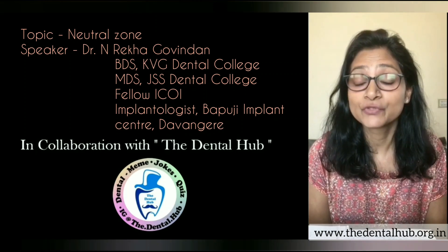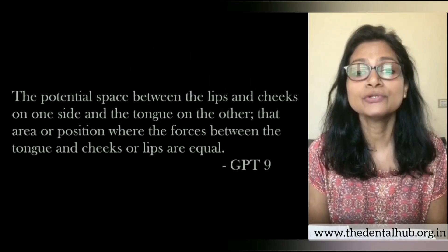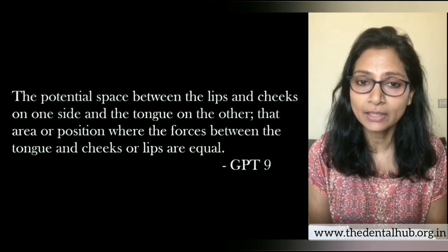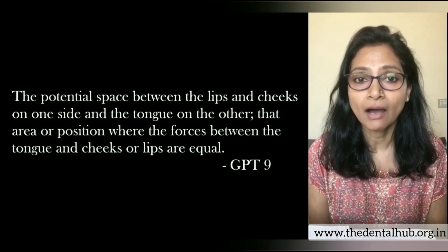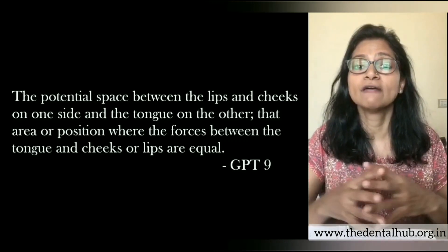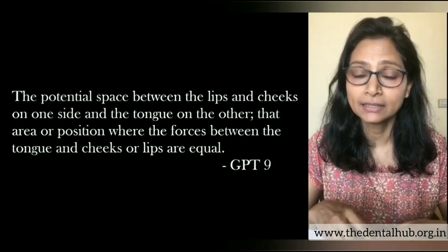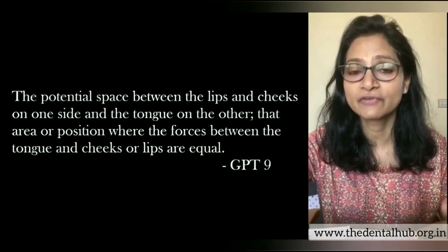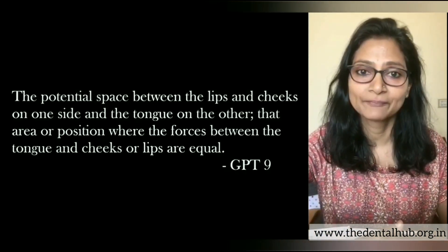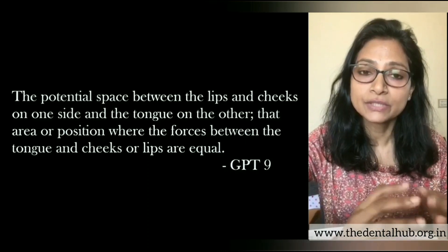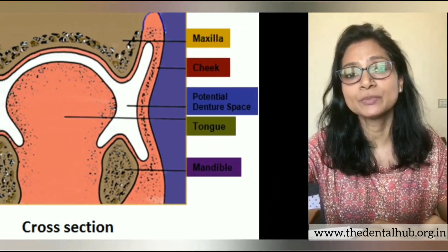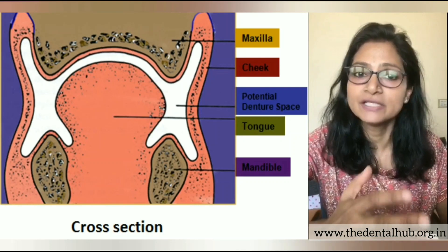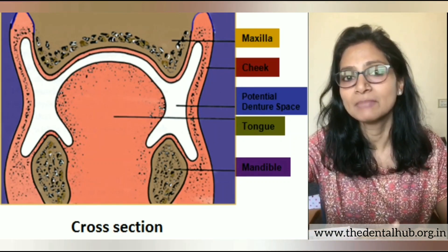What is the neutral zone? The neutral zone is a zone in the oral cavity wherein the outward horizontal forces from the tongue are equal to the inward horizontal forces from the perioral muscles. This zone varies from person to person depending upon the strength of contraction of these individual muscles.